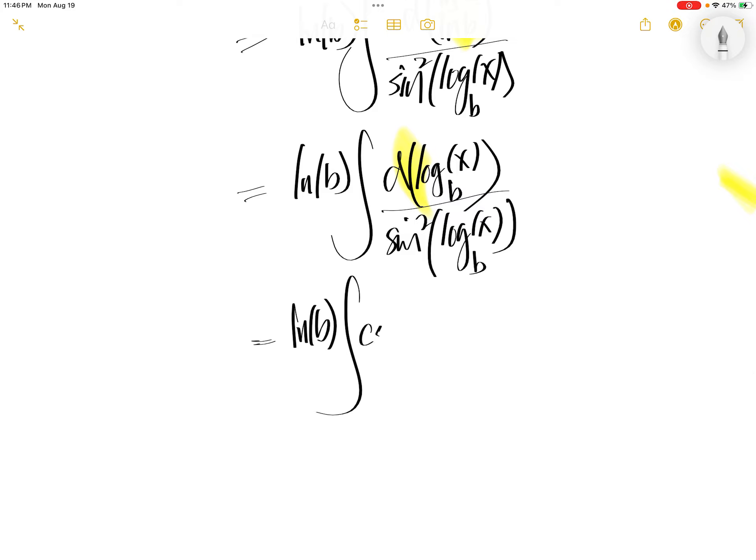Now, that 1 over sine squared log x to the base b can be written as cosecant squared log x to the base b, d log x to the base b.